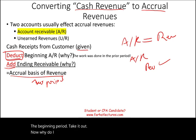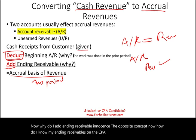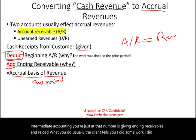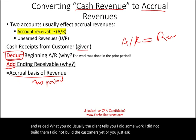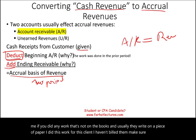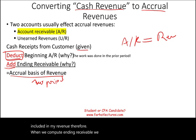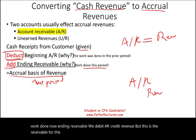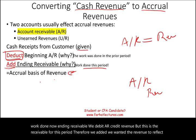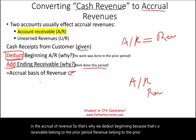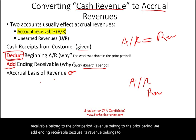Why do we add ending receivable? The opposite concept. On the CPA exam and in intermediate accounting, the ending receivable number is given. In the real world, the client tells you they did work and haven't billed the customers yet. When we compute ending receivable, we add it because that's work done this period — debit AR, credit revenue for this period. So we deduct beginning because that revenue belongs to the prior period, and we add ending because that revenue belongs to this period. You only have receivable if you have revenue.